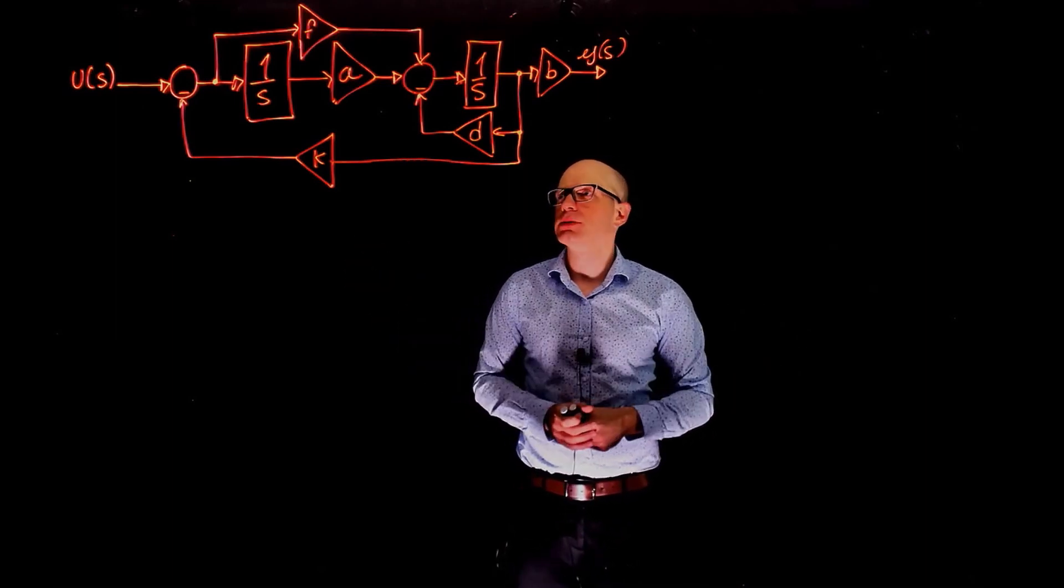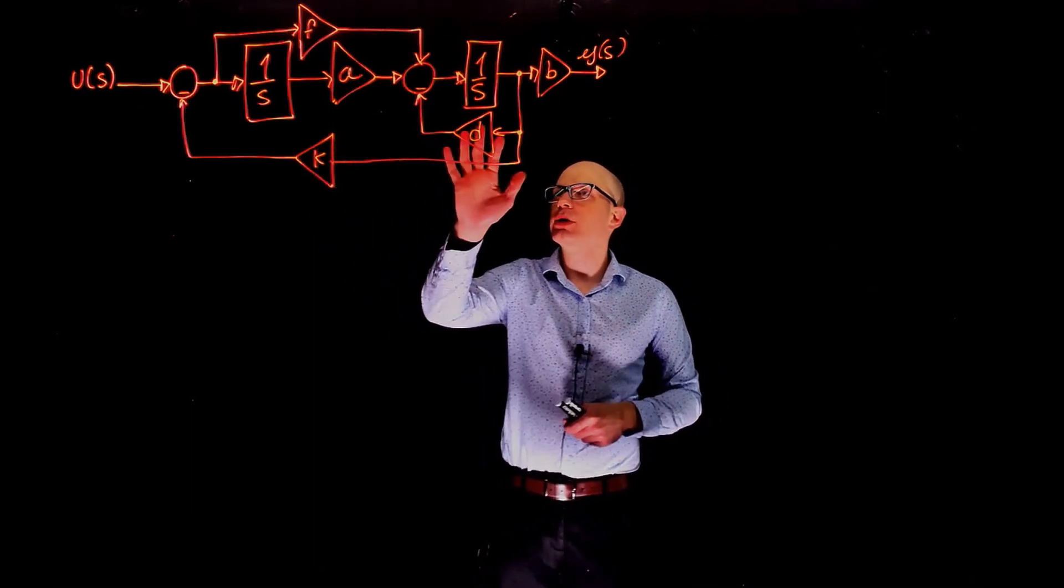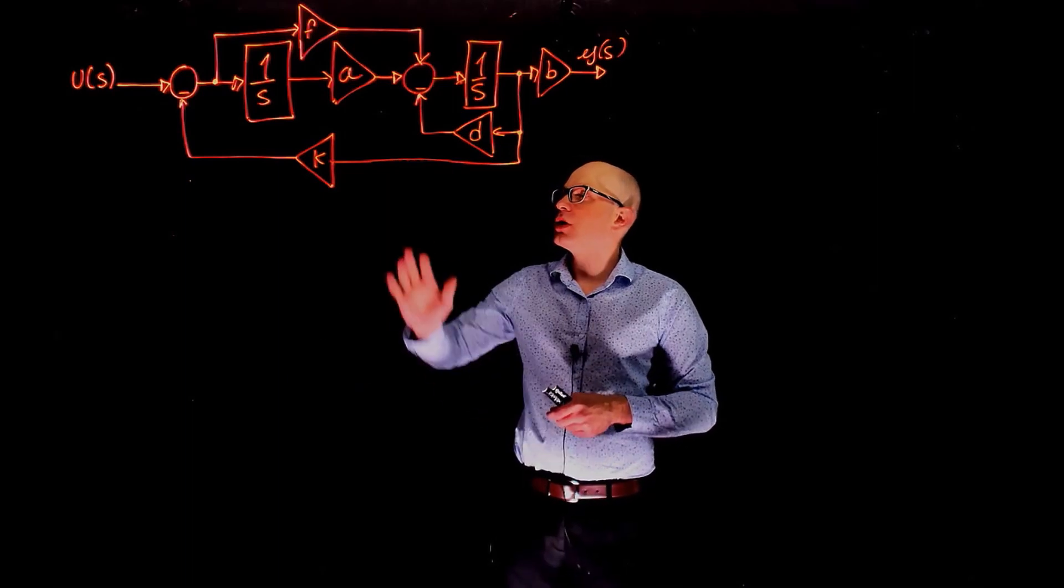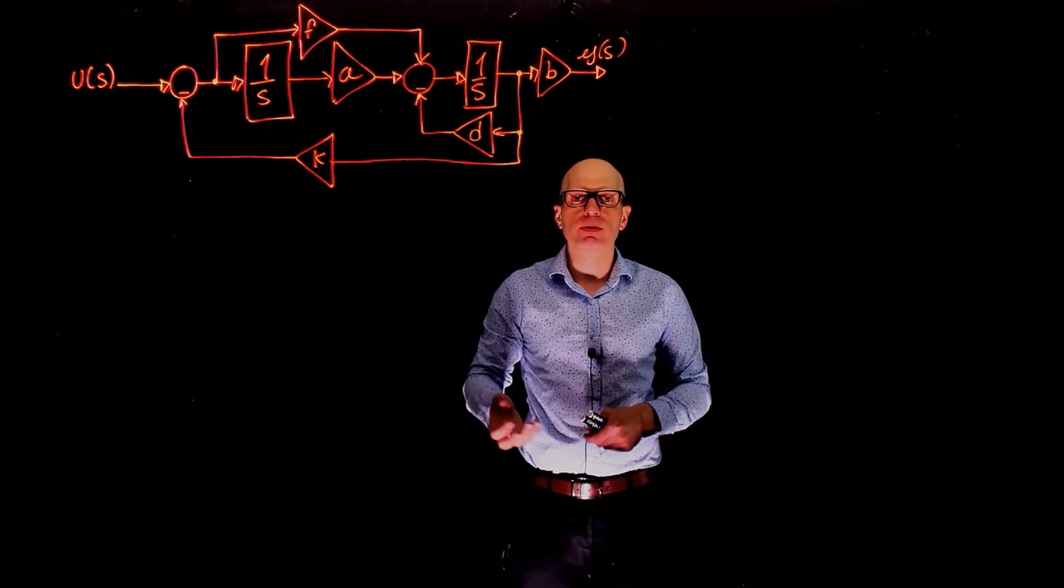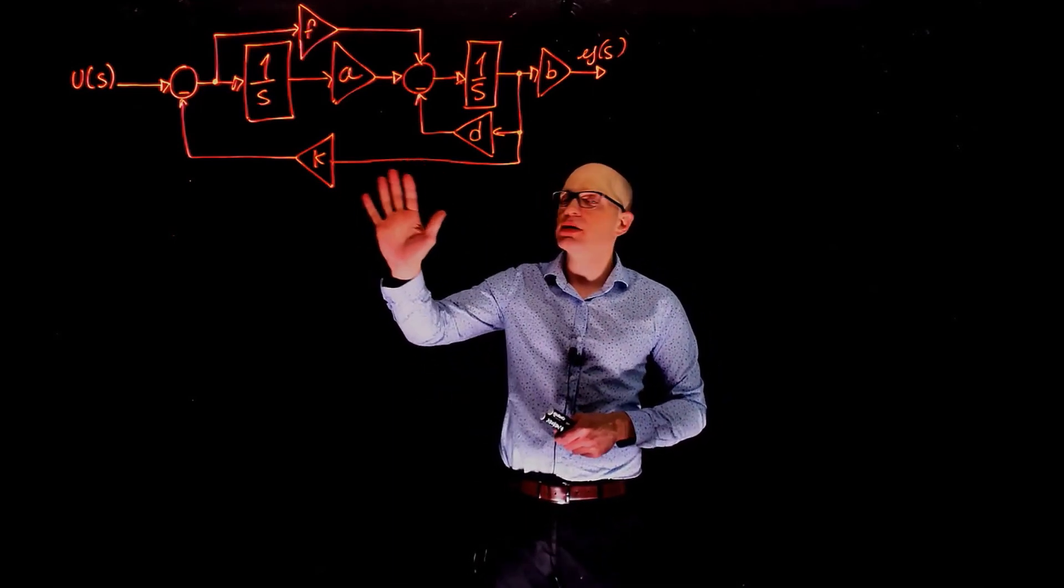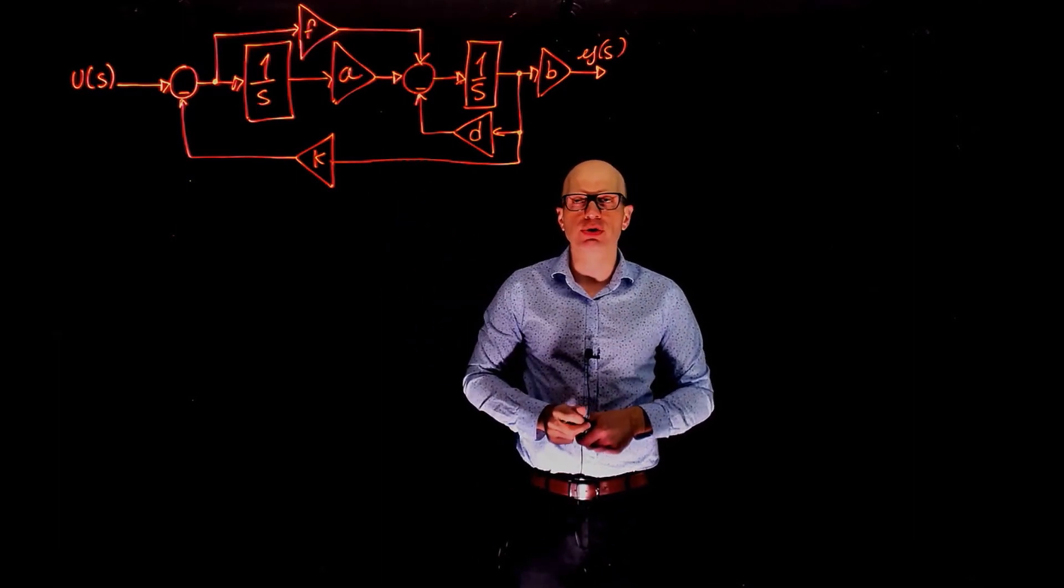How can we do that? Well, let's analyze this system. We have two integrators. These integrators are not in cascade, meaning that we are probably integrating two different variables, and we are integrating those variables only once. Hence this suggests that this system can be described as a set of two first order differential equations.